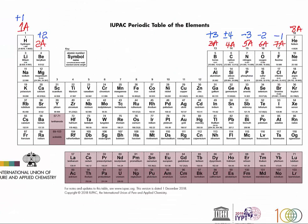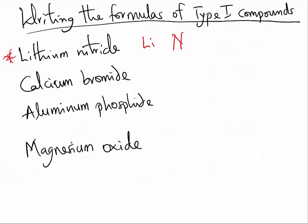If you look at the periodic table, lithium from group 1A has a charge of plus 1. Nitrogen is from group 5A. It will always have a charge of minus 3. So let us put the charges: plus 1, minus 3.